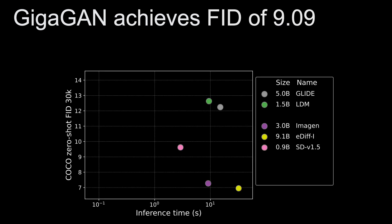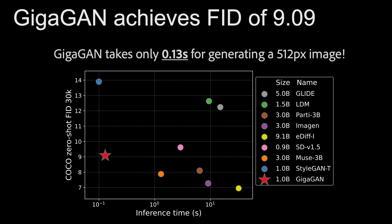Let's move on to our experimental section. The figure displayed here compares the zero-shot FID scores of recent diffusion, autoregressive, and concurrent GAN-based models, as well as our GigaGAN model. As demonstrated in the figure, GigaGAN achieved an impressive FID score of 9.09 with a lightning-fast inference speed, generating a 512 pixel image in just 0.13 seconds.